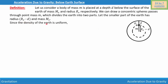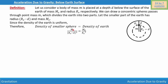Since the density of the earth is uniform, the density of the smaller sphere equals the density of the entire earth. We can write: mass of the smaller sphere over (r_e minus d)^3 equals mass of the earth over r_e^3. We omit the 4/3π factor because it appears on both sides and cancels out.